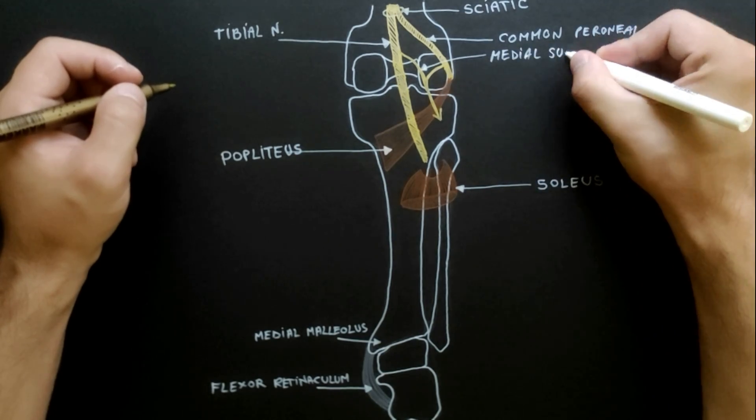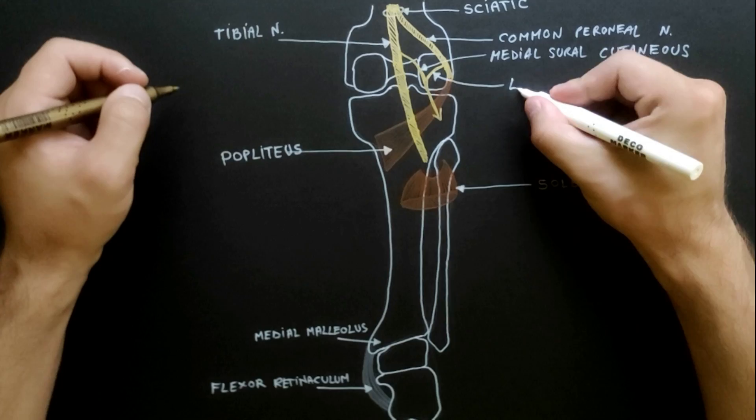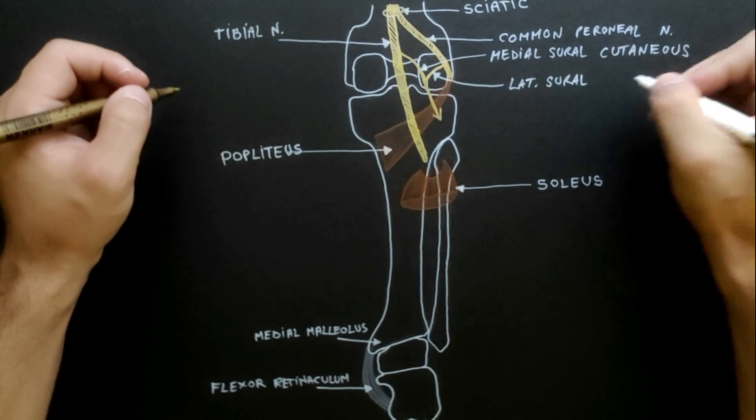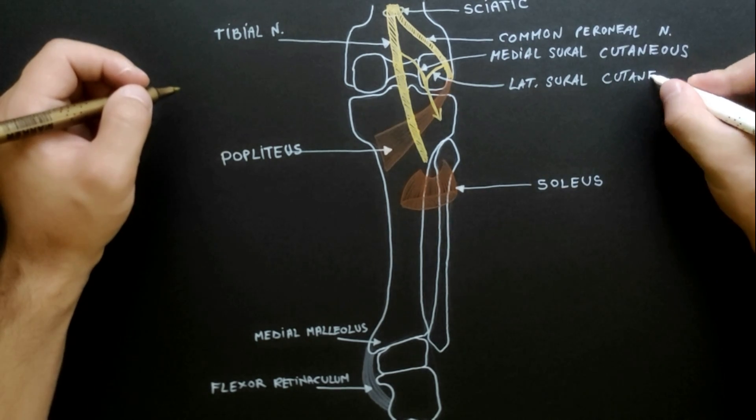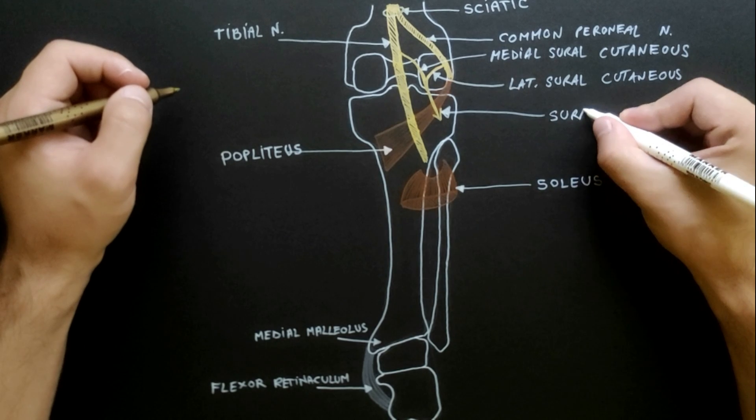A cutaneous branch called the medial sural cutaneous branch, which joins the lateral sural cutaneous branch from the common peroneal nerve to form the sural nerve.